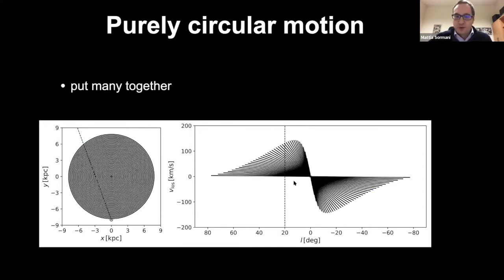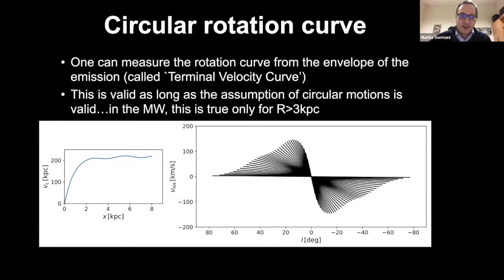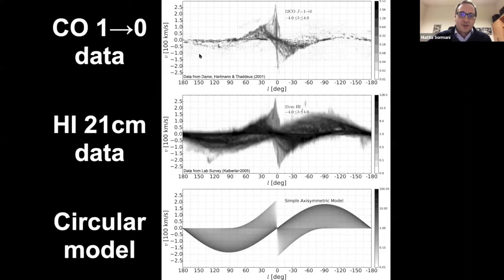When you put many of these rings together, the first application — a very old one — is that you can measure the rotation curve of the Milky Way by measuring the envelope of these in the observations and comparing with the models. If you change slightly the rotation curve on the left, then the envelope changes, and you can deproject this and go backwards. This works as long as the assumption of circular motion is correct, which holds outside the bar region.